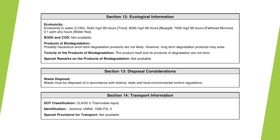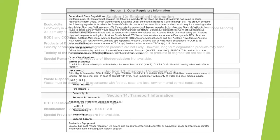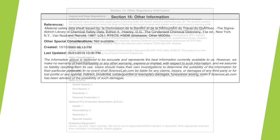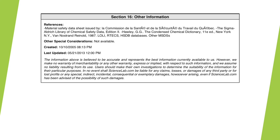Section 14 identifies considerations you should make while transporting the chemical or substance. Section 15 goes into further detail regarding any additional regulatory information available. Section 16, the final section, is available for other information that may not be included in the previous sections.